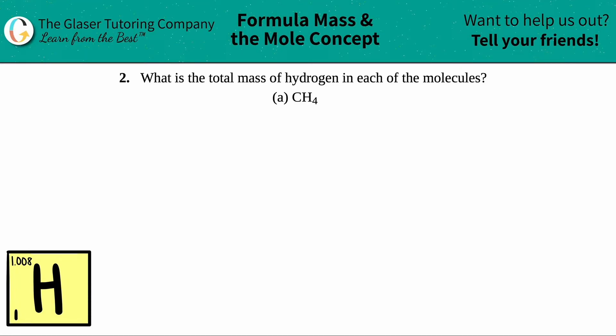Number two: What is the total mass of hydrogen in each of the molecules? We have letter A. So in this case we have to find the total mass of hydrogen of CH4, which is methane. The first thing I'm going to do is just write out CH4.